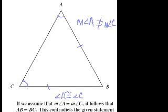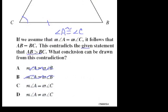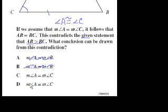We can't make the assumption that angle A equals angle C because it leads to a contradiction. So the correct answer is D.